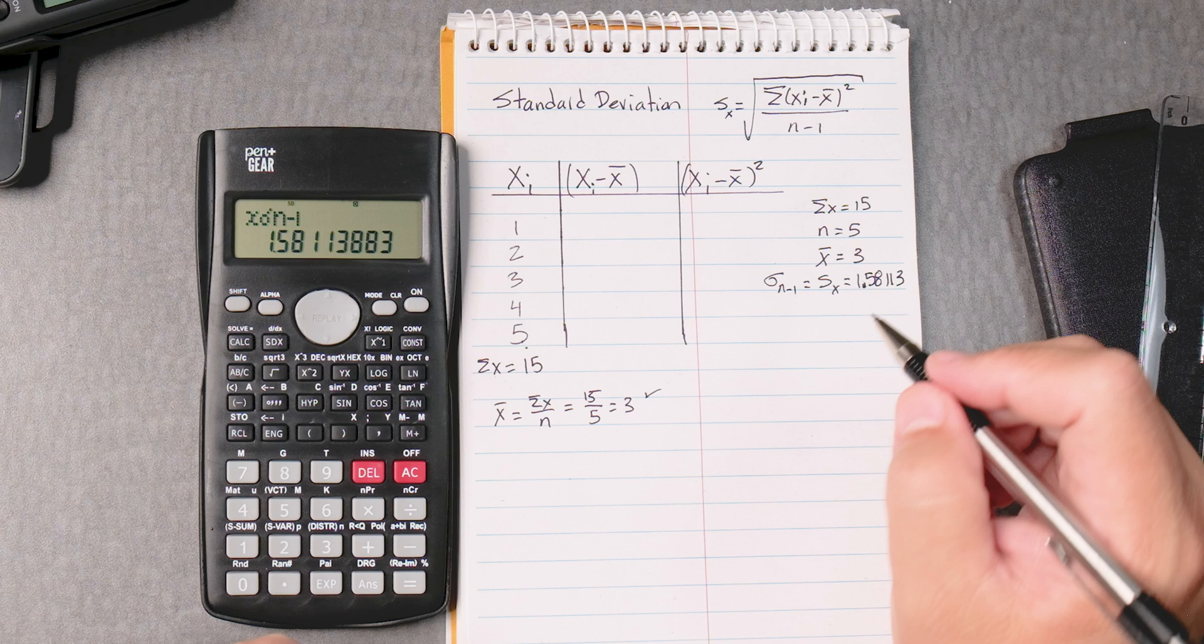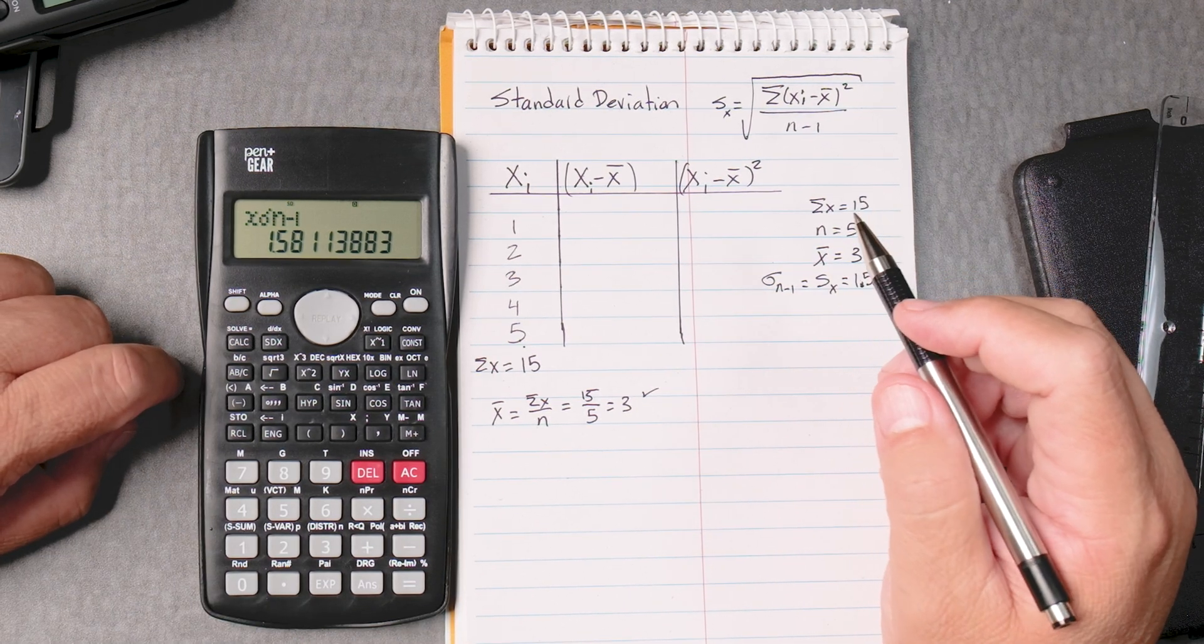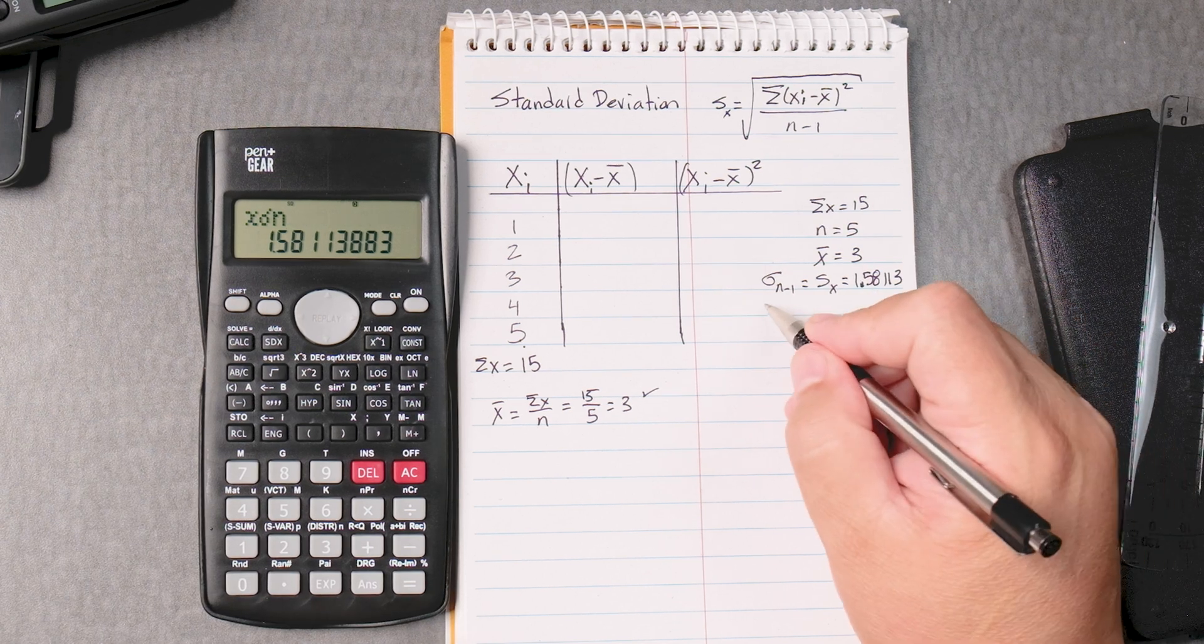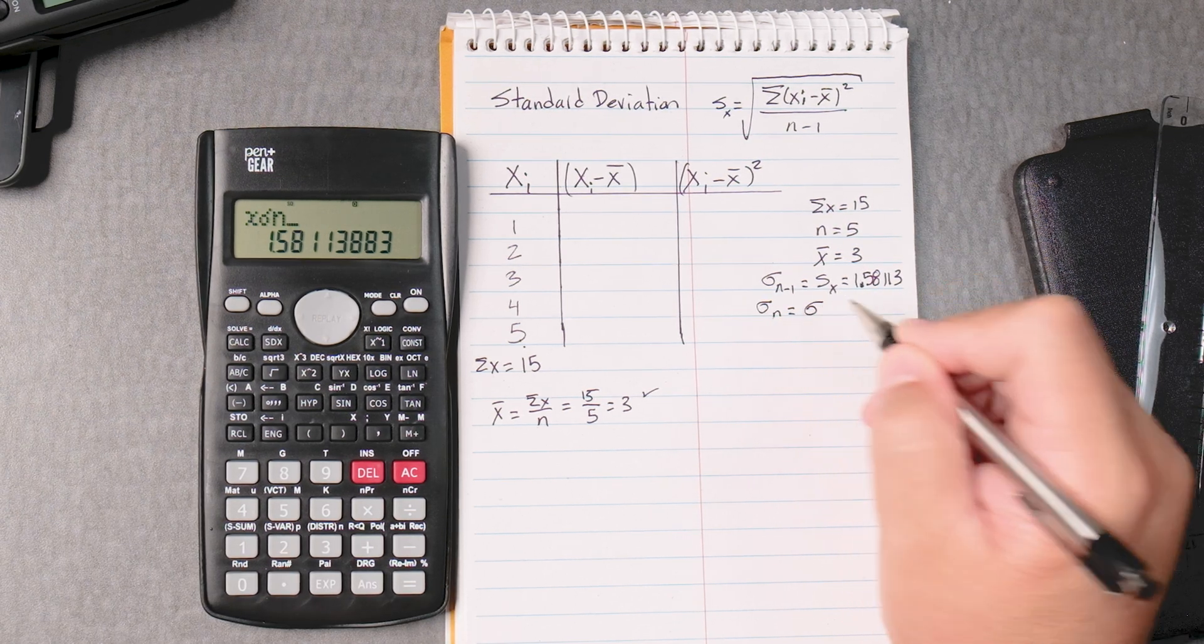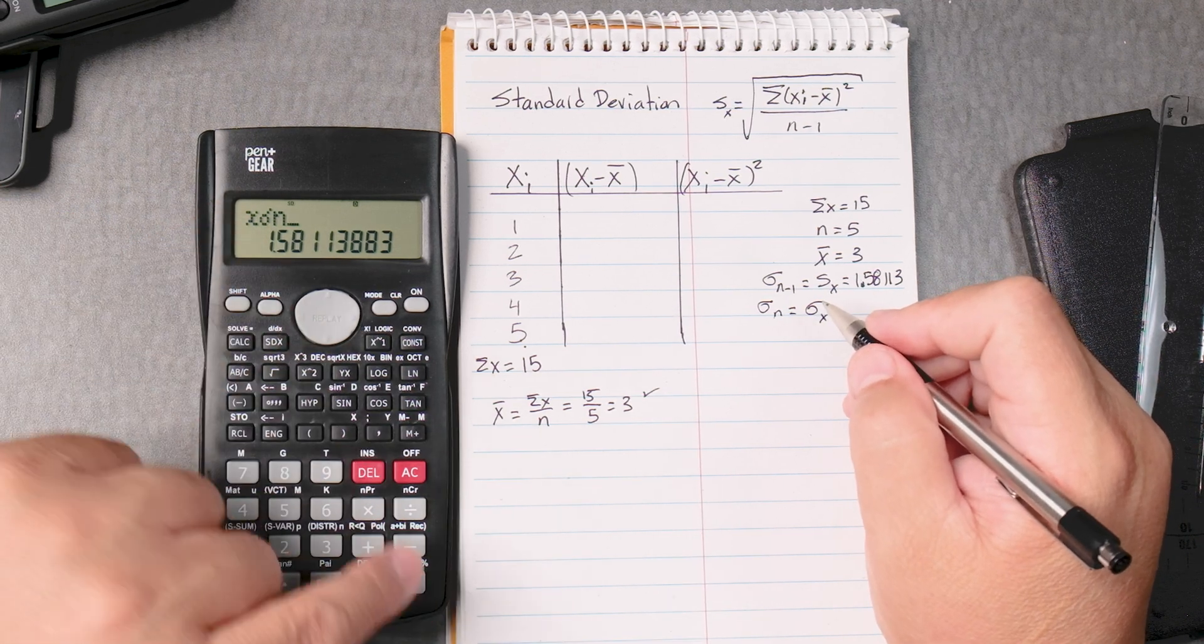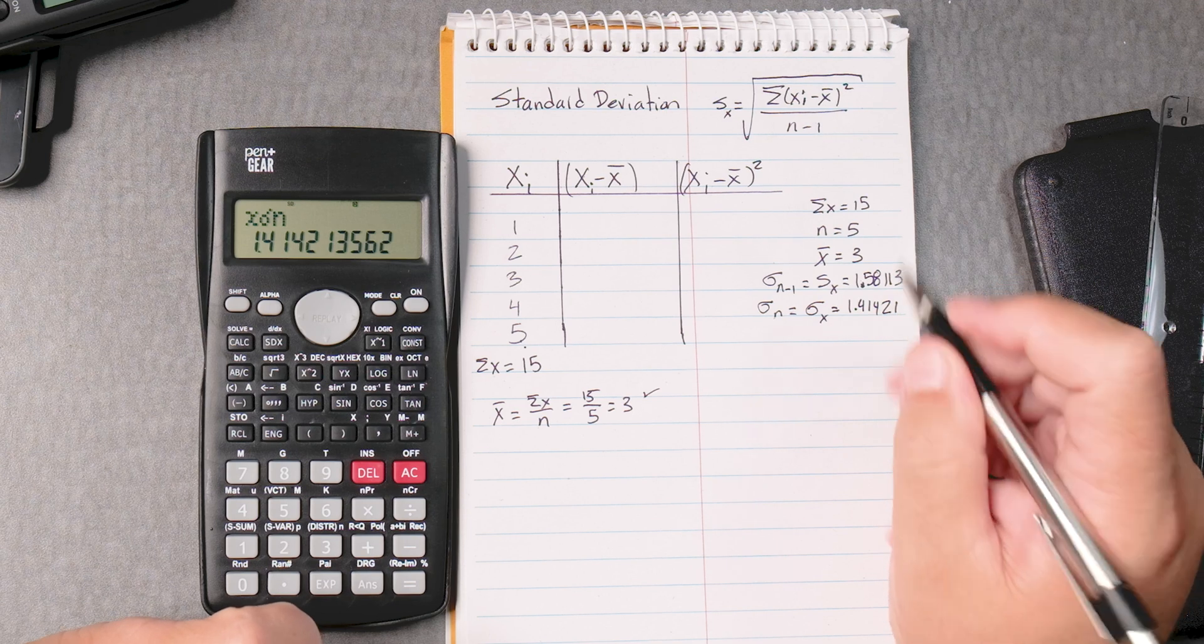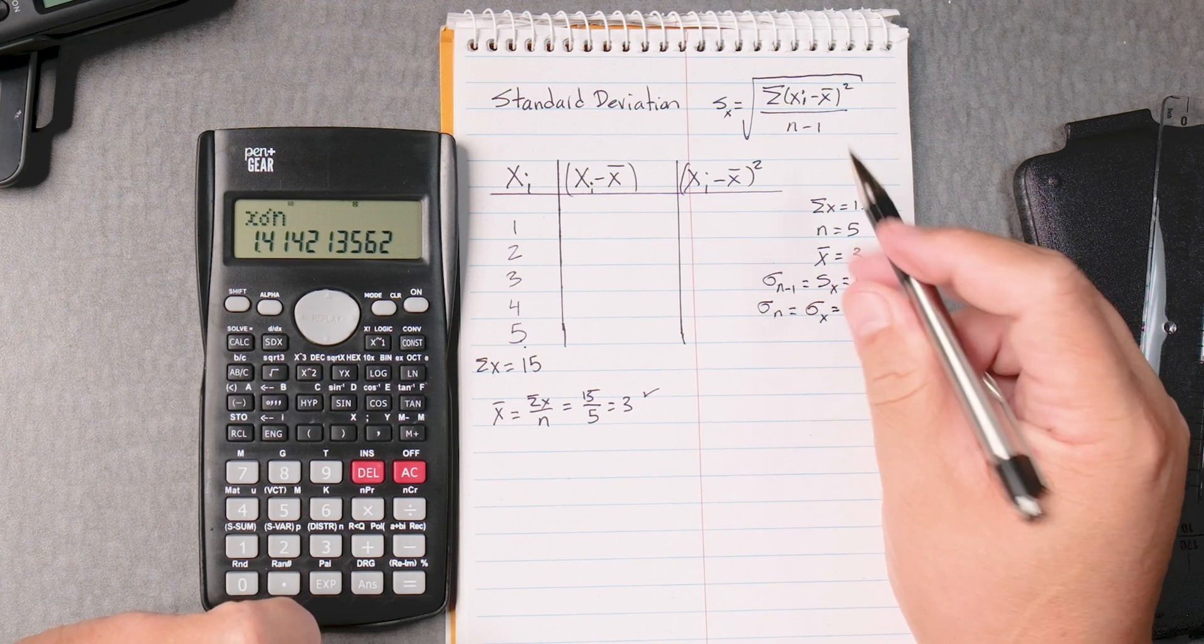That's how we find the standard deviation using the calculator. There's other things too. If we press shift 2 and if we press number 2, which is sigma n, that's the population standard deviation value, which is equal to... and then we got to press equals. So we get the answer, it's 1.41421. This is not the answer, sigma x. This is a different formula.